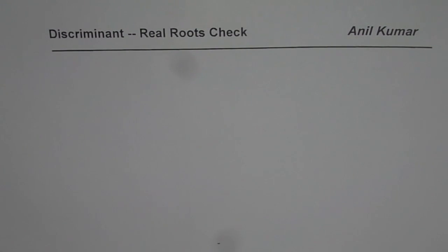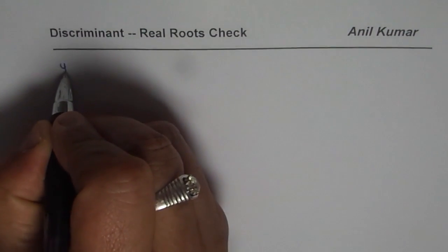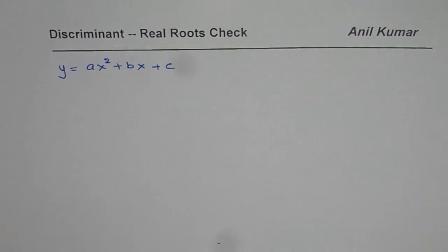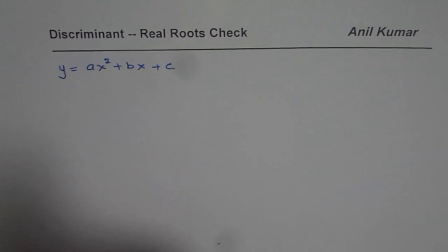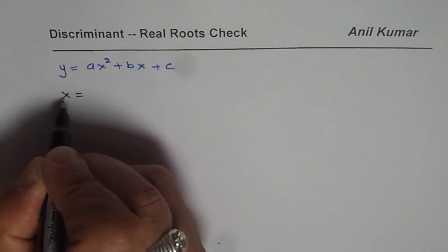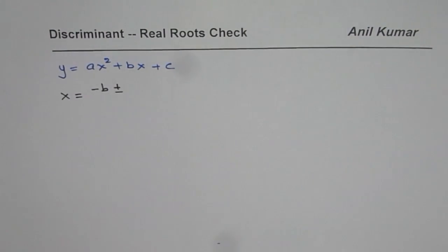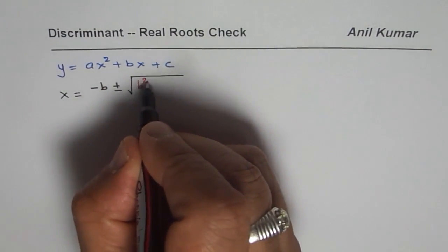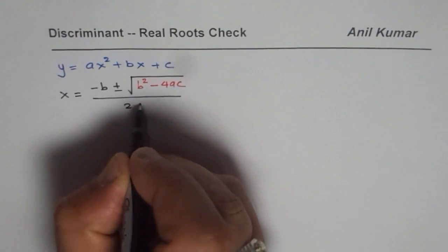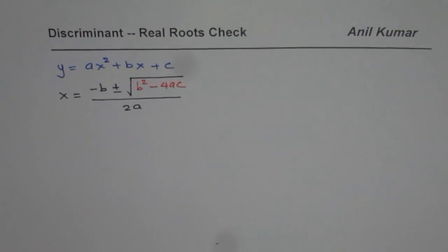I am Anil Kumar and in these set of videos we are going to explore quadratic equations and find how many real roots we can get. In general, a quadratic equation can be written as y equals ax squared plus bx plus c. For any quadratic equation, we can find the value of x using the quadratic formula: x equals minus b plus or minus the square root of b squared minus 4ac, divided by 2a.